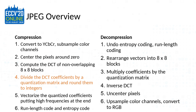The quantized coefficients are vectorized, putting high frequencies towards the end, and then that vector is run-length coded and entropy coded. I've highlighted step 4 in orange — that's the only lossy step in JPEG compression. All the other steps are lossless.